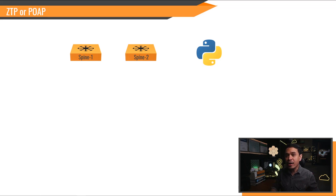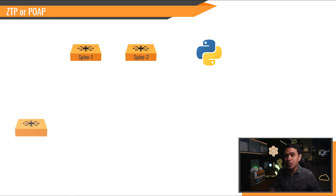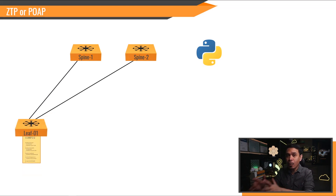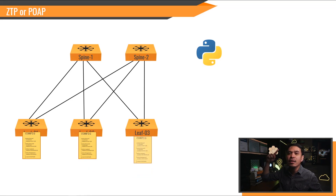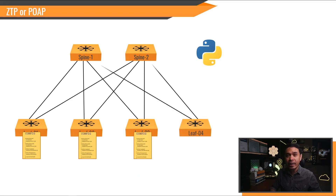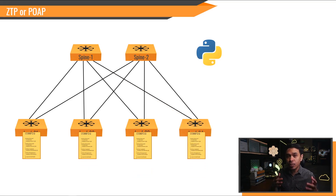Network devices with no existing configuration — no IP address, no hostname, no nothing. All you need to do is connect the switch to the network, boot it up, and it will load configuration to every single network device automatically. You can do this automation not only to one switch, but it can be 10, 20, or hundreds of network devices, all at the same time.